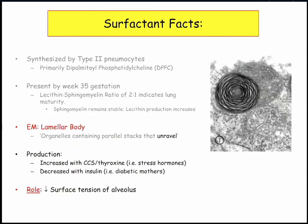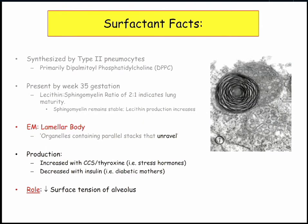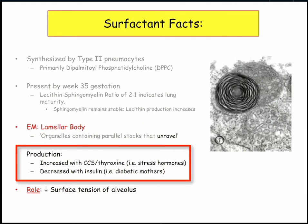Occasionally there may be an electron micrograph in the setting of a surfactant question — they won't just ask you to identify it cold, but it's good to know. The lamellar body is an organelle containing parallel stacks that unravel; this is surfactant — it unravels like putting down new rugs in the alveoli. Surfactant production is increased by stress, steroids, corticosteroids, and thyroxin. Surfactant is decreased by insulin, so diabetic mothers have a higher incidence of infants born with respiratory distress.